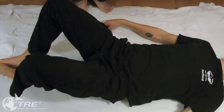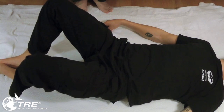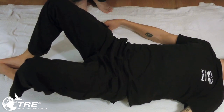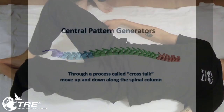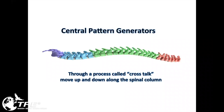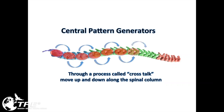As you can see here, the person has activated the tremor mechanisms, but they're located entirely in the legs. But there is a mechanism in the spine called central pattern generators, and through the process of crosstalk, they move this tremor mechanism up and down along the spinal column.